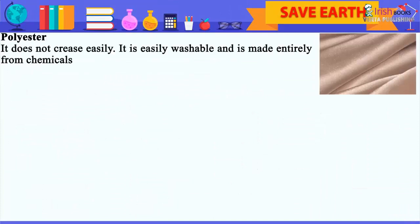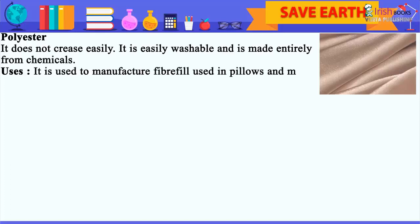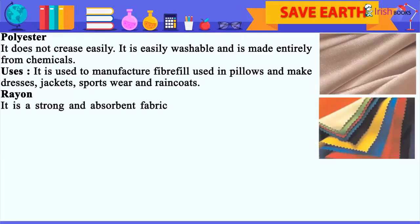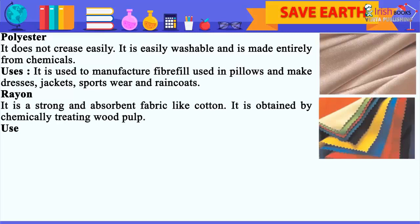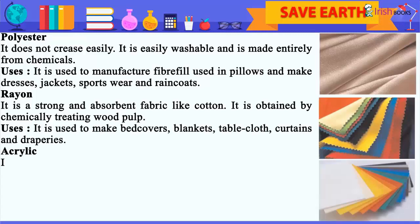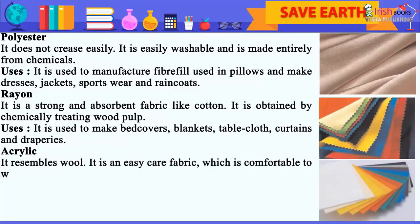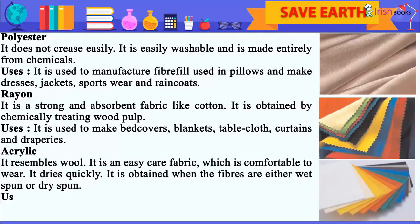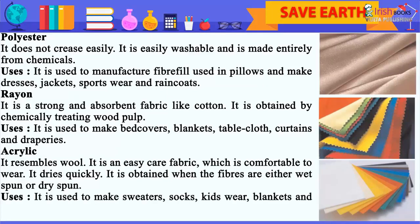Polyester: it does not crease easily, is easily washable, and is made entirely from chemicals. Uses: it is used to manufacture fiber fill used in pillows and to make dresses, jackets, sportswear and raincoats. Rayon: it is a strong and absorbent fabric like cotton.